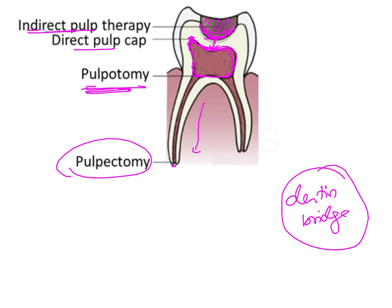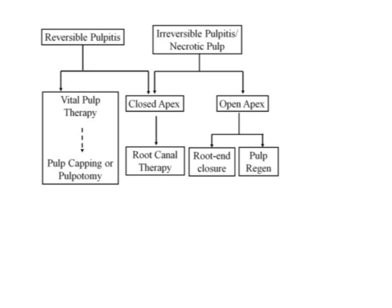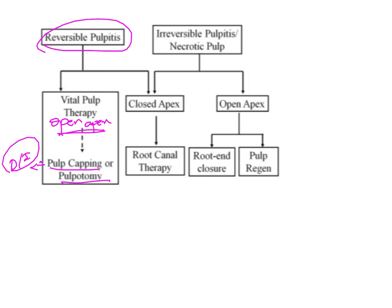Apart from knowing what the different pulp therapies are, it is also important to know in which situations they are indicated. In cases of reversible pulpitis where the pulp is vital and there is an open apex, we will consider pulp capping or pulpotomy — either direct or indirect — depending on the depth of the lesion. If the depth of the lesion is minimal, we can consider indirect pulp capping; if there is some exposure, we can do direct pulp capping; or if the coronal portion is involved, we can do pulpotomy. This is all done in cases of open apex with vital pulp to allow root closure to take place.